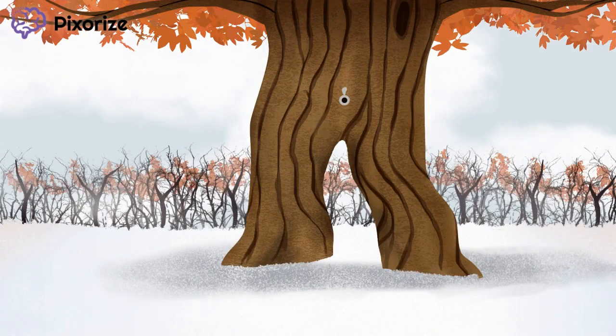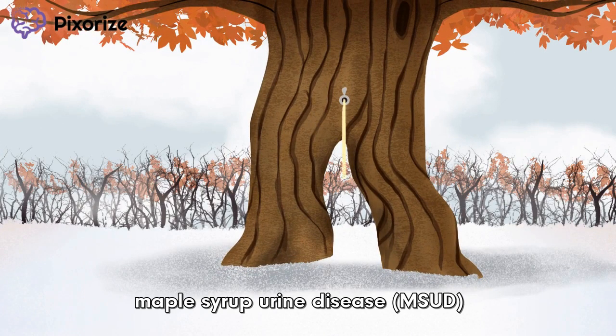Focus on how this maple tree is being tapped. It seems like they tapped this tree right above a split in its trunk. Notice how the split trunk resembles a pair of legs, so that the tree kind of seems like it's urinating. This urinating maple tree is our anchor to help you remember the term Maple Syrup Urine Disease, as well as its classic clinical presentation: sweet-smelling maple syrup urine in the diapers of affected children.